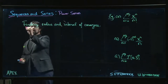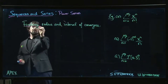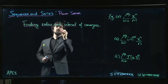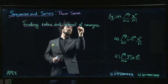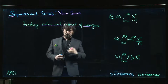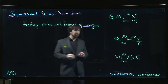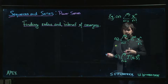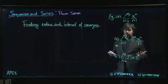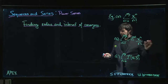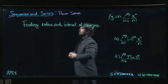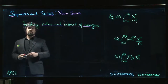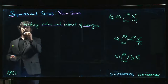Next we want to look at how do you actually find the radius and the interval of convergence. We defined these in the last video and we saw that these are things that are guaranteed to exist for any power series — we stated the theorem even if we didn't prove it. So how do we actually track them down? We need one more theorem that helps us out.